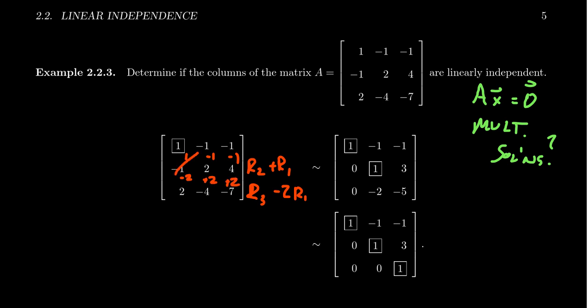And so notice that 1 minus 1 cancels. 2 minus 1 is a 1, and 4 minus 1 is a 3. For the third row, 2 minus 2 cancels. Negative 4 plus 2 is a negative 2, and then negative 7 plus 2 is a negative 5.